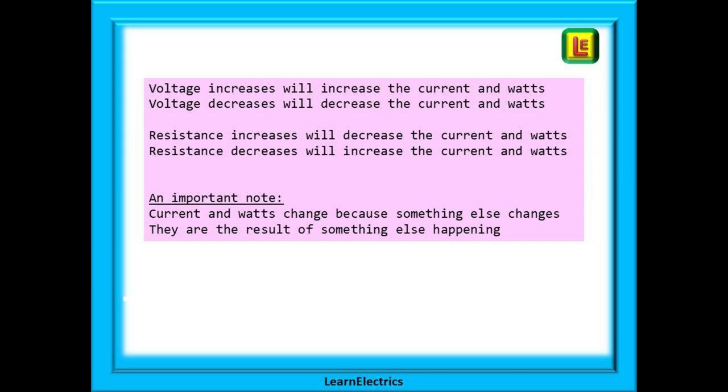A voltage increase will increase the current and watts, whilst a voltage decrease will decrease the current and the watts. The opposite of this is the resistance. An increase in resistance will decrease the current and the watts, and a decrease in resistance will increase the current and the watts.